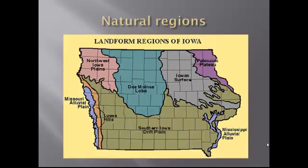The Des Moines Lobe tends to puddle up quite a bit when it rains a lot, so a lot of water runs off and there's a lot of tiling in this part to get the water to run off into the stream beds. That's one of the issues we have to deal with — the flooding.